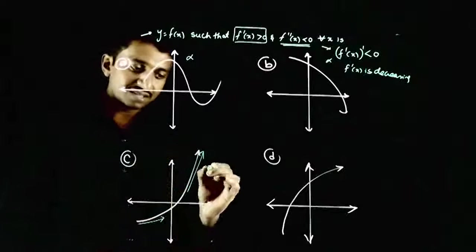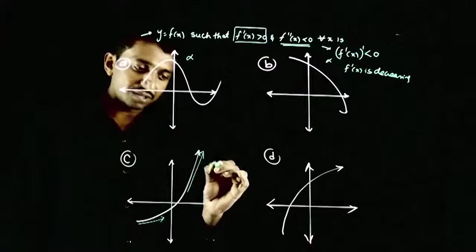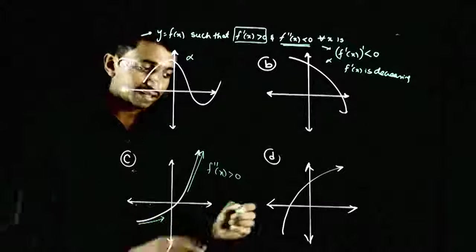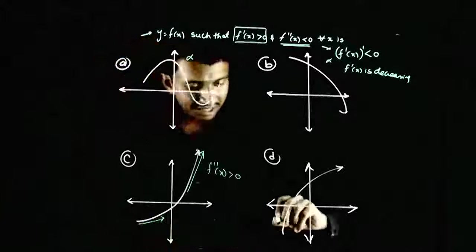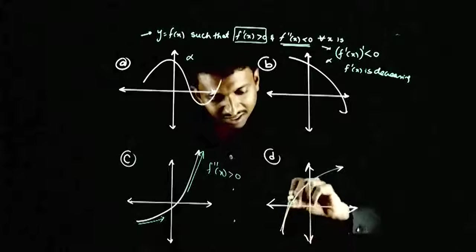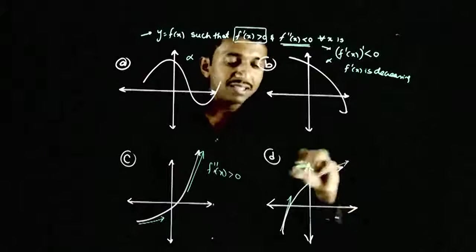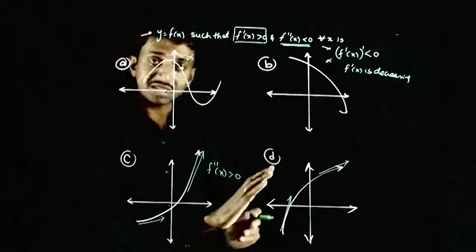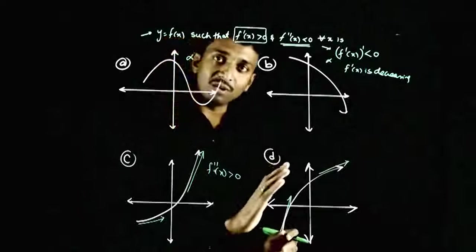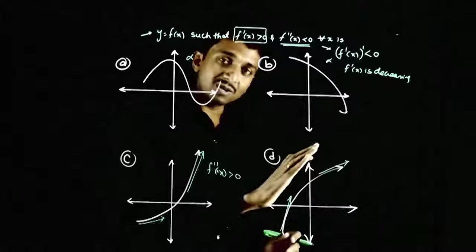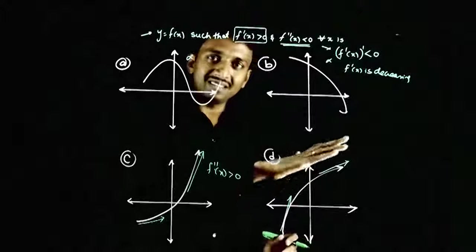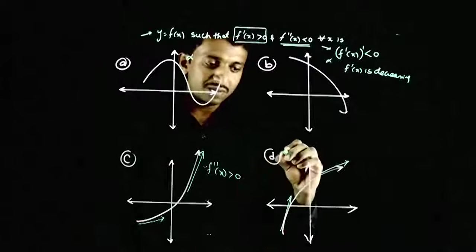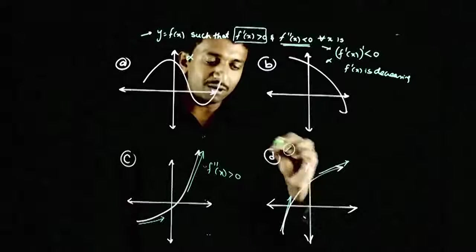So for this graph, f double dash of x is greater than zero. Yaha dekhi hai: starting mein tangent steep hai. As we go on, the tangent is becoming flatter. Iska matlab, starting mein slope jada hai, as we go forward the slope is decreasing. Iska matlab f dash of x is decreasing. So this will be the right option.